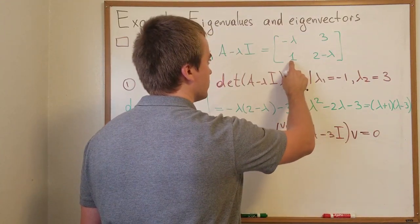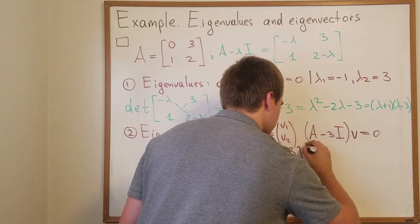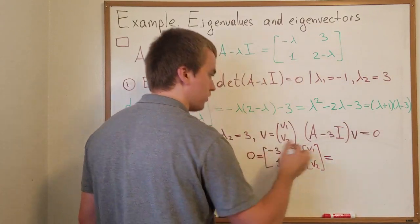And here is going to be 1, negative 1. And this matrix is times v1, v2. And we know it's equals to 0 on the left hand side.